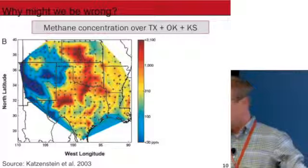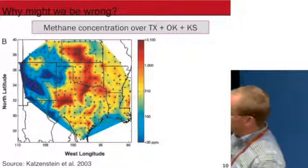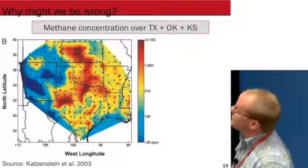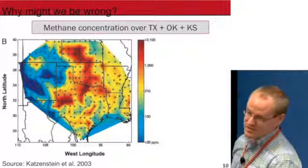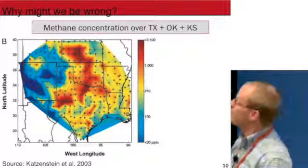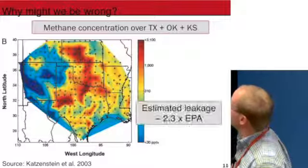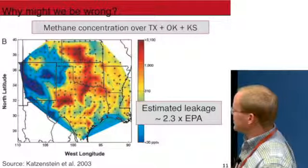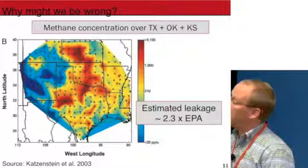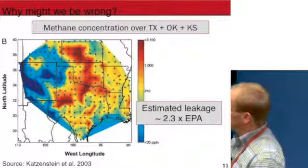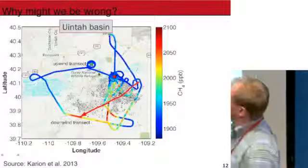This is an early study from 2003 of this new crop of studies where they look at methane concentrations, and they found a large plume over Texas, Oklahoma, and Kansas. Their estimated leakage was something over two times the EPA leakage for this region.